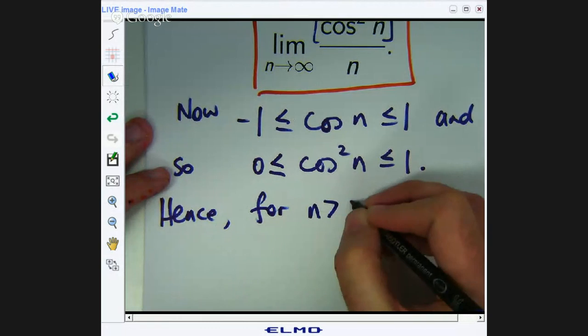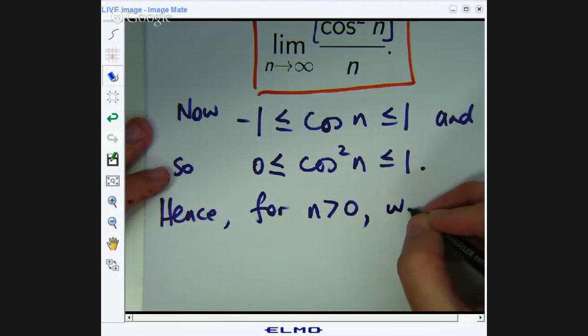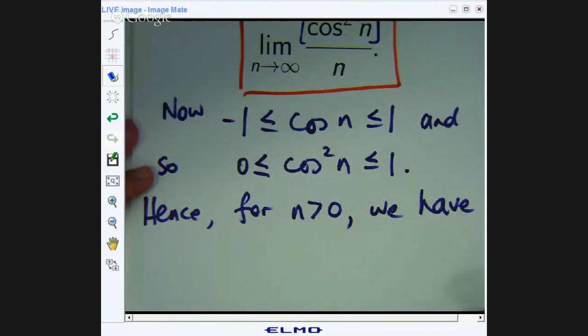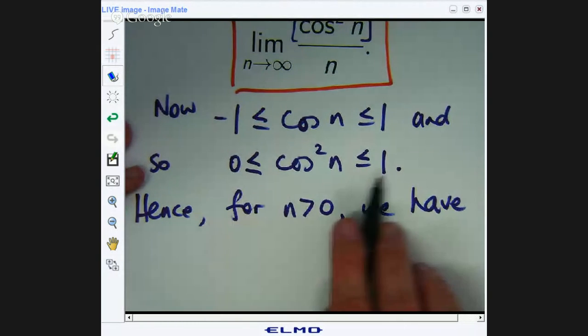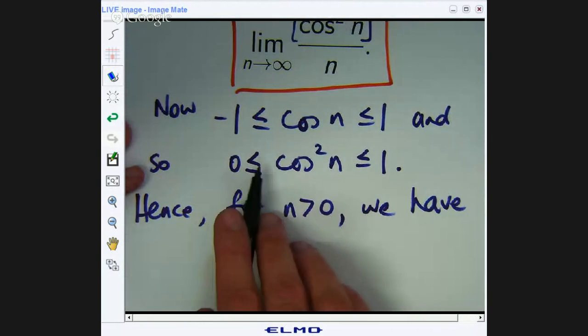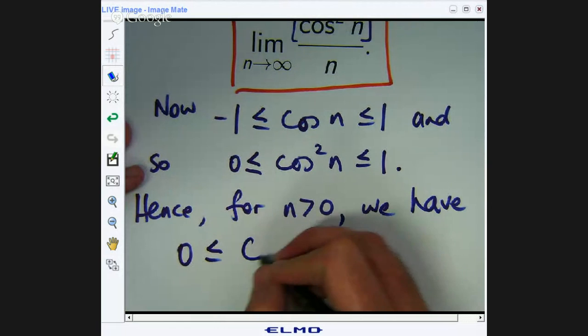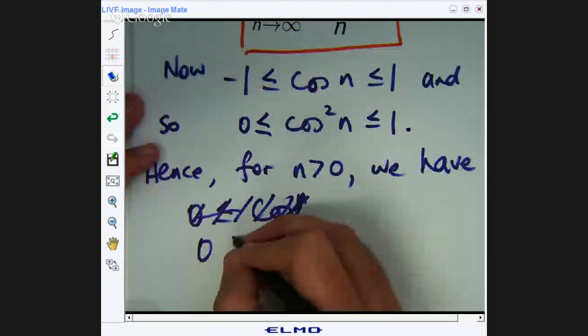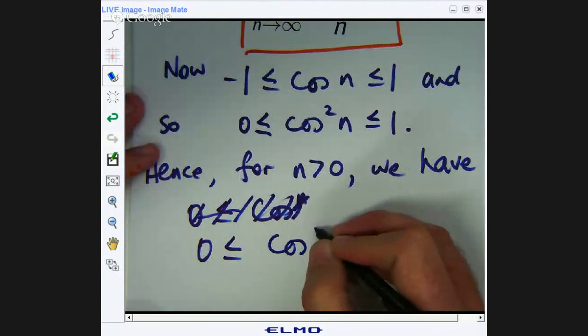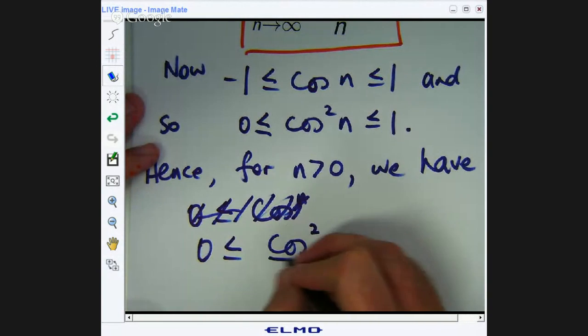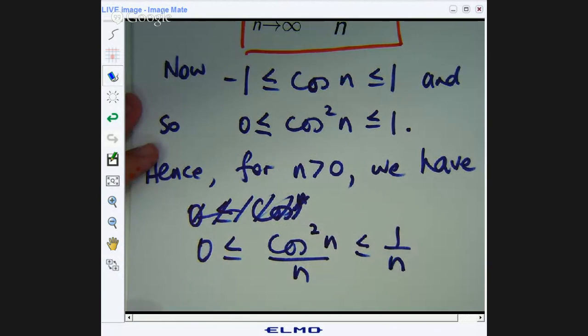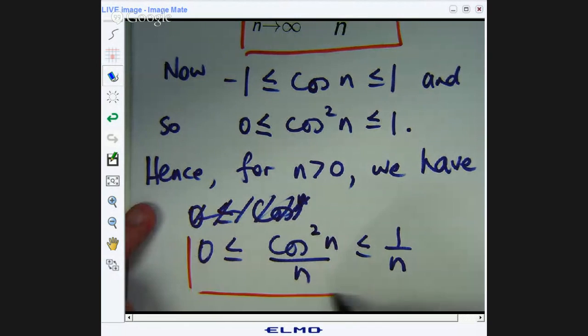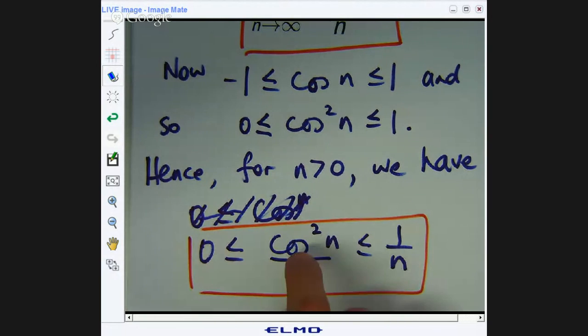For n greater than zero, we have, okay, just divide everything here by n. Oh sorry, let me do that again. Okay? Now, this is an important stage in the solution now. We've got these inequalities.